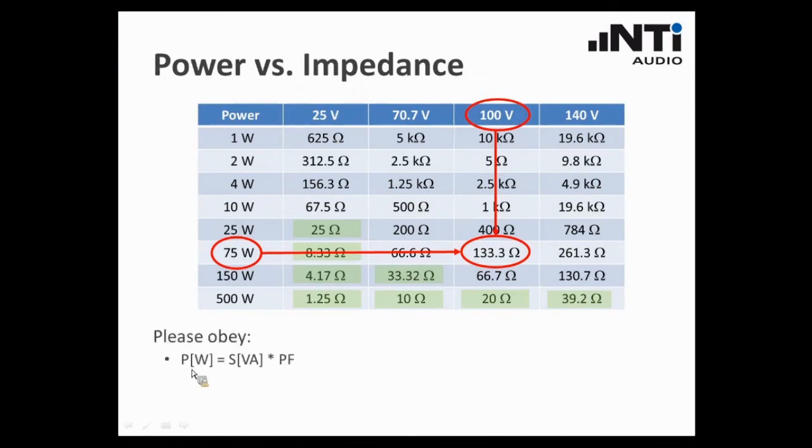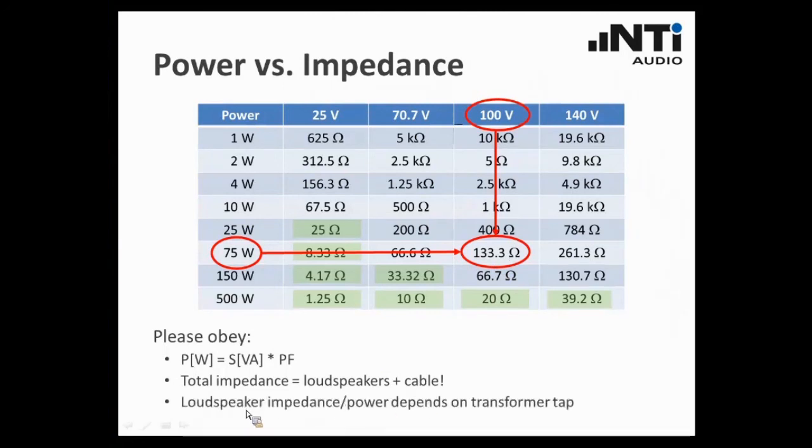So let us summarize. What is very important is that this expression here of the amplifier output power is done in Watt, whereas, as mentioned before, we need the apparent power S for the determination of the true performance of the amplifier, and we can get that with this formula, so the real or the active power of the amplifier is the apparent power multiplied by the power factor. So here you see why we need to measure the power factor as well. Second, as mentioned before, the total impedance here system impedance is the combination of the loudspeakers and the cable. Third, if we want to amend the loudspeaker impedance or power depends on the transformer tab. What does that mean? Let me explain that on the next slide.